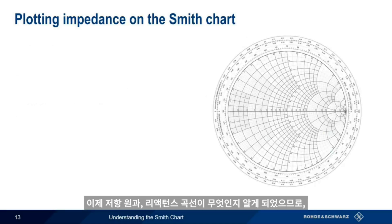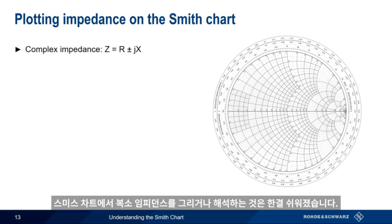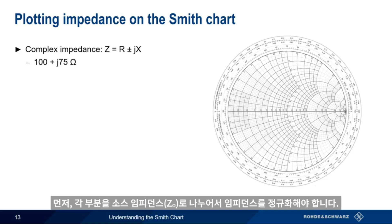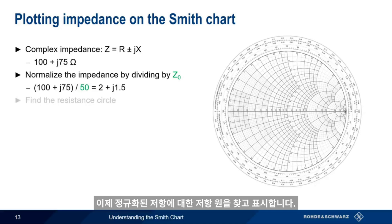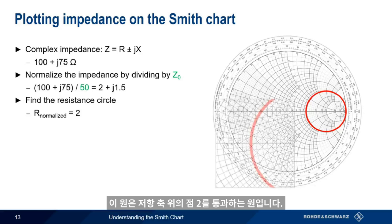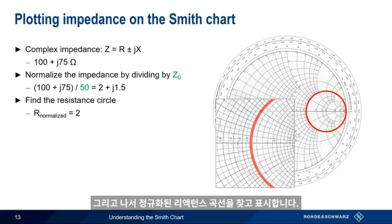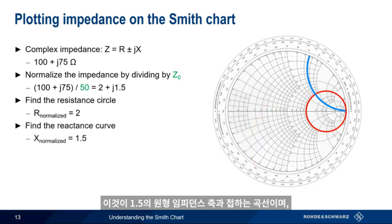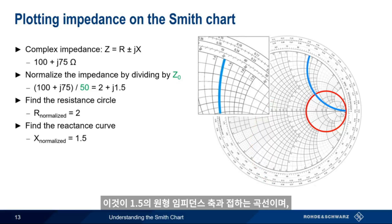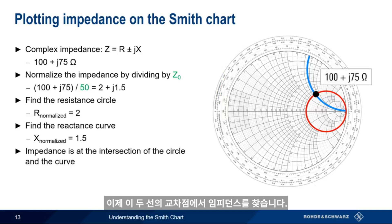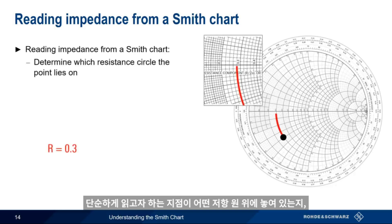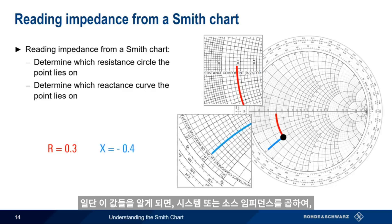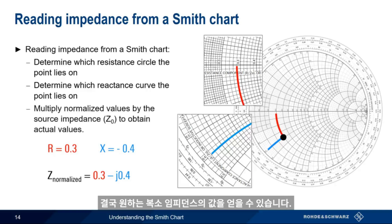Now that we know what resistance circles and reactance curves are, it's easy to either plot or interpret complex impedances on the Smith Chart. Let's use the complex impedance 100 plus 75j as our example. First, we need to normalize this impedance by dividing both real and imaginary parts by our source impedance Z sub 0. Assuming the standard 50 ohms, our normalized impedance is 2 plus 1.5j. We now find and plot the resistance circle for this normalized resistance — the circle that passes through the point 2.0 on the resistance axis. Then we find and plot the reactance curve for our normalized reactance — the curve that touches the circular impedance axis at 1.5. We find our impedance at the intersection of these two lines. We can reverse this procedure to read a complex impedance from a Smith Chart by determining which resistance circle and reactance curve our point lies on, then multiplying by Z sub 0 to obtain the actual value.